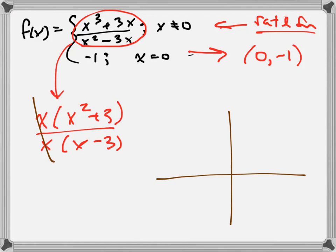I'm going to have some graph like this. And at 0, I'm going to have a hole. That's what factoring out, factoring and canceling represents in rational function. It represents a hole.